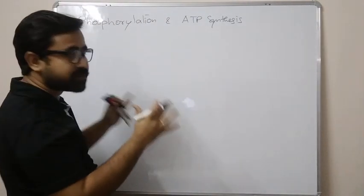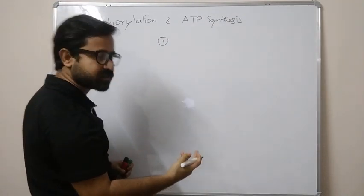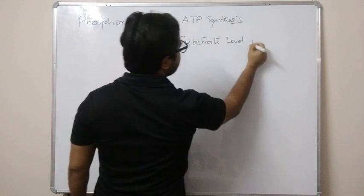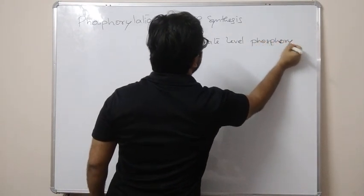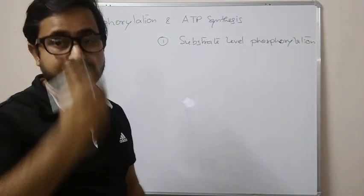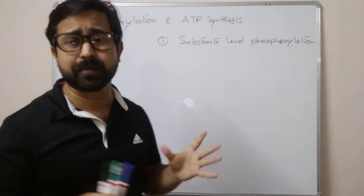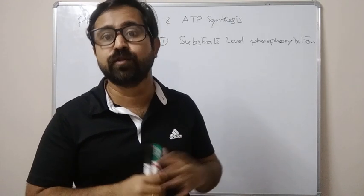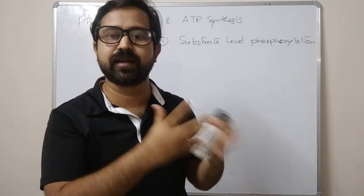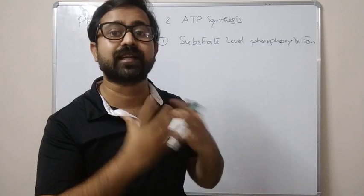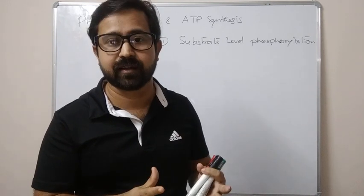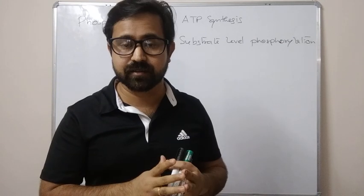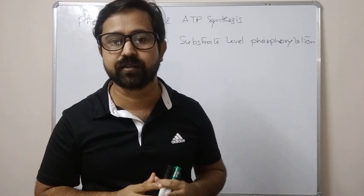Looking at phosphorylation and ATP synthesis, we talk about three different sets of reactions. First, substrate level phosphorylation. In substrate level phosphorylation, there is a reaction where a substrate can gain or lose a phosphate group. When the substrate phosphate gives itself, or high energy bonds break to release free energy — delta G — that free energy is utilized by certain enzymes to phosphorylate adenosine diphosphate to make ATP.